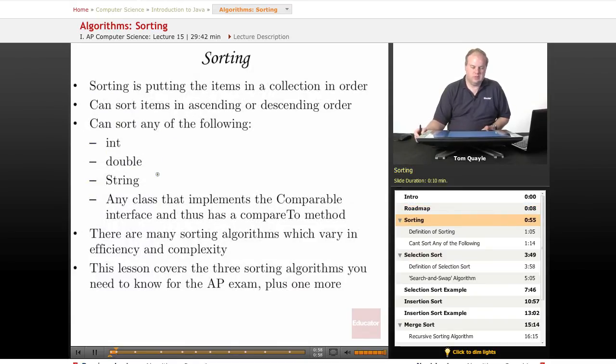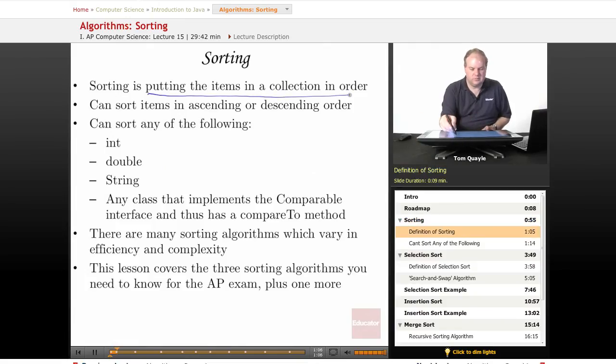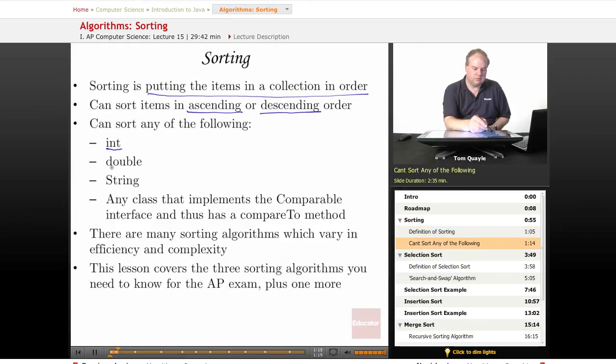Sorting is one of the most important applications in computer software. Sorting is basically putting the items in a collection in order. It can either be ascending order or descending order. And you can sort any of the following: you can sort integers, doubles, strings, and actually you can sort just about anything. You can sort any class that implements the Comparable interface.